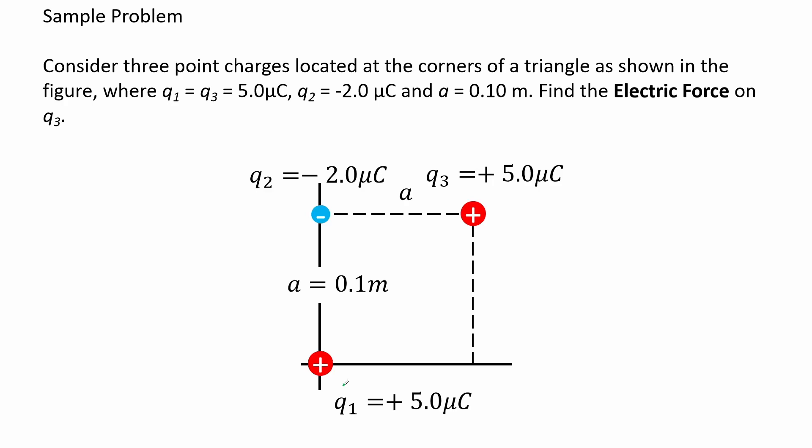Sample problem. Consider three point charges located at the corners of a triangle as shown in the figure, where Q1 equals Q3 equals 5.0 microcoulombs, Q2 equals negative 2.0 microcoulombs, and a equals 0.1 meters. Find the electric force on Q3. Refer to the figure.